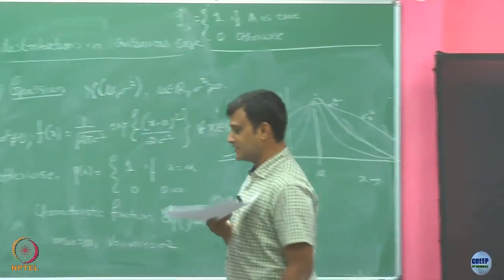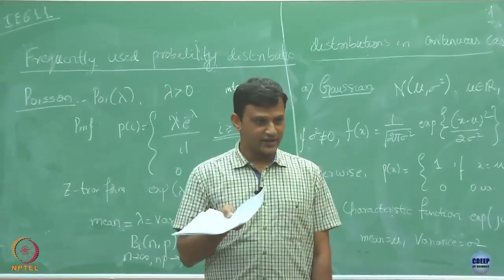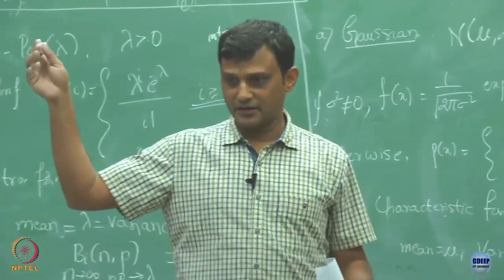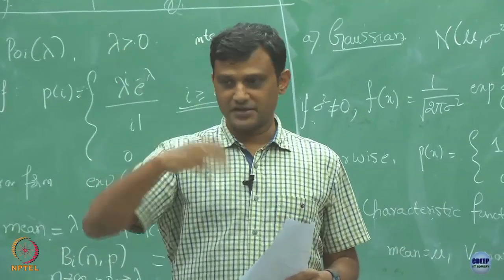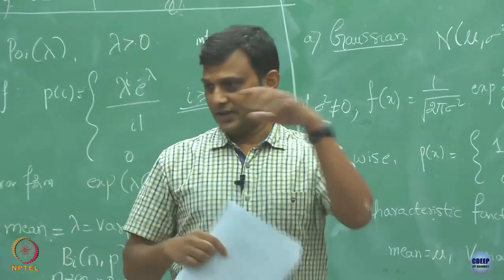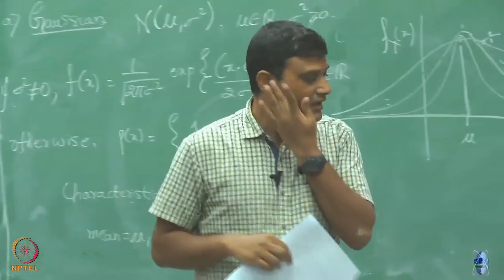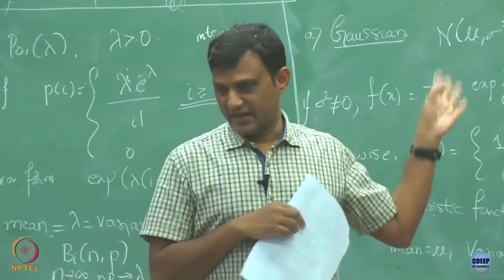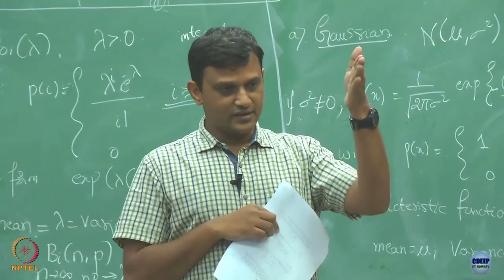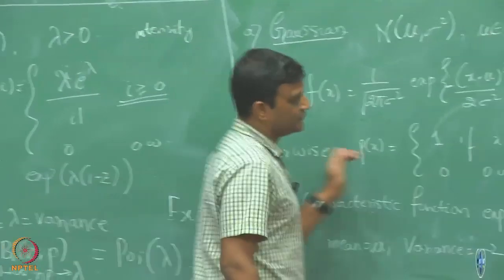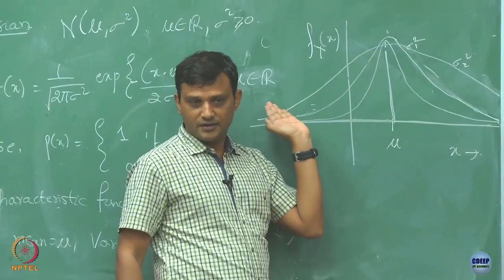Another example is deformation with temperature. Temperature can be both positive and negative in critical applications, having a wide swing. When you apply positive temperature, deformation looks one way; when it goes negative, it looks another way. The Gaussian applies as long as you can adjust the mean and there is heavy concentration about a particular value that slowly dies down.